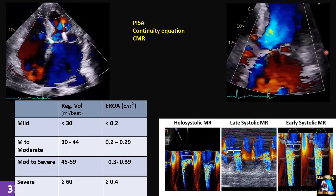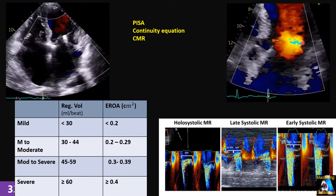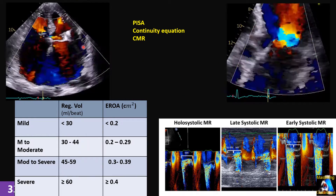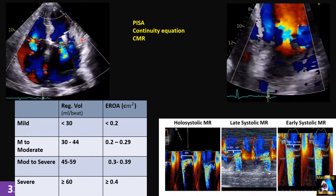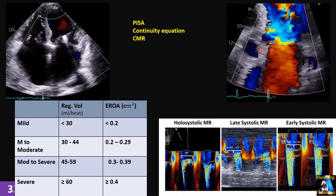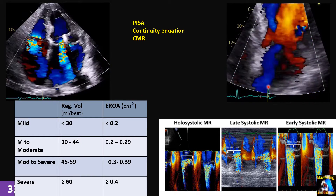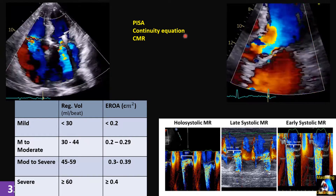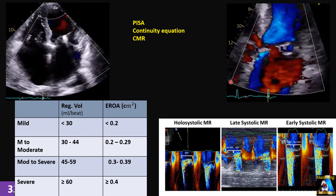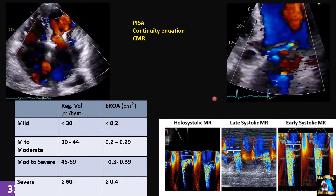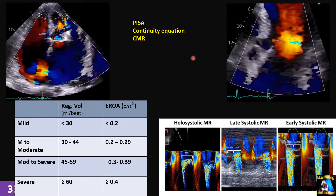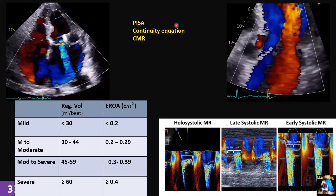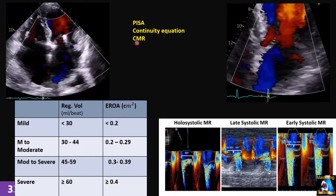In these three situations — multiple jets, eccentric jet, and non-holosystolic MR — PISA will not be accurate. So PISA we cannot use in those cases. The only remaining techniques are two: continuity equation and CMR.